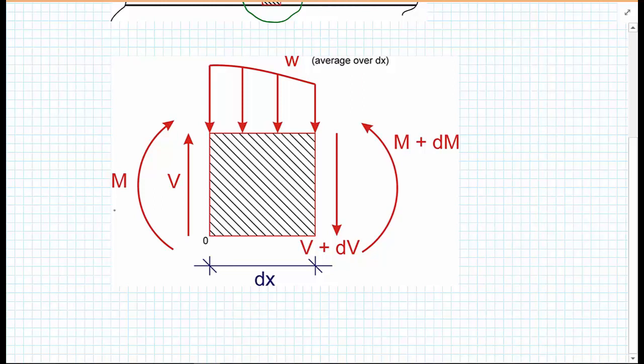We're going to consider a general loading W acting over it. We're actually going to take the average value of this loading across the small portion dx of the beam.